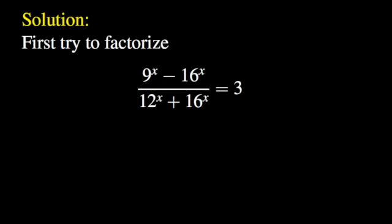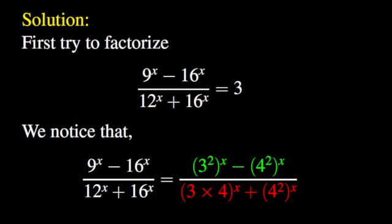We will first try to factorize the expression as much as we can. This should normally help simplify the problem. The numerator 9 to the power x minus 16 to the power x can be expanded as 3 squared to the power x minus 4 squared to the power x. And the denominator 12 to the power x plus 16 to the power x can be expanded as the quantity 3 times 4 to the power x plus 4 squared to the power x.